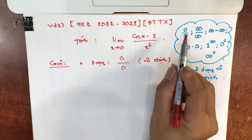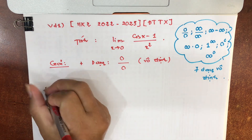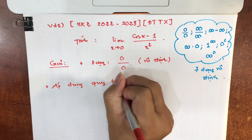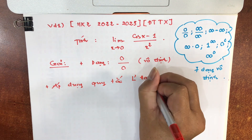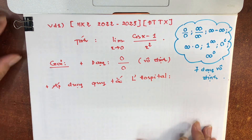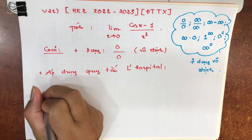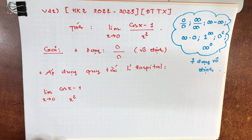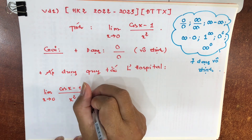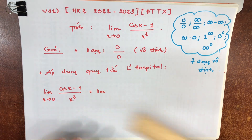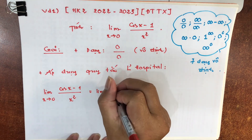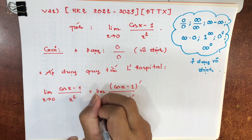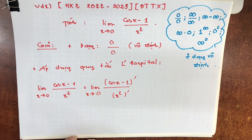Bài toán chúng ta đang xét rõ ràng nó rơi vào dạng vô định 0/0. Bây giờ áp dụng quy tắc L'Hôpital. Cách viết: lim của (cot x - 1)/x² khi x tiến về 0, bằng lim của đạo hàm tử số chia đạo hàm mẫu số. Lấy đạo hàm của (cot x - 1) ở tử số, và x² ở dưới mẫu lấy đạo hàm. Nhớ là đạo hàm tử số chia đạo hàm mẫu số, không phải đạo hàm của cả phân thức.